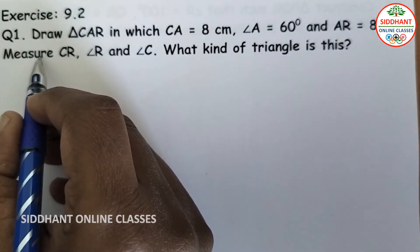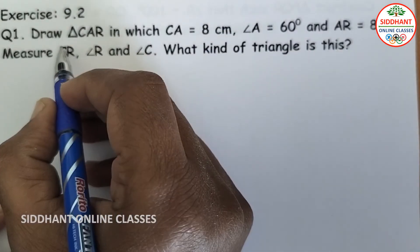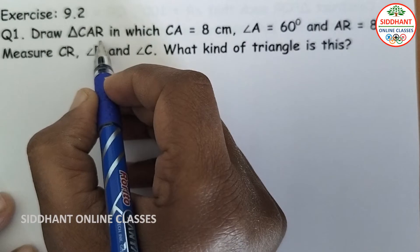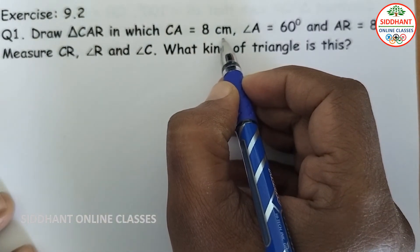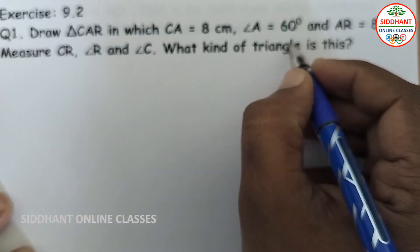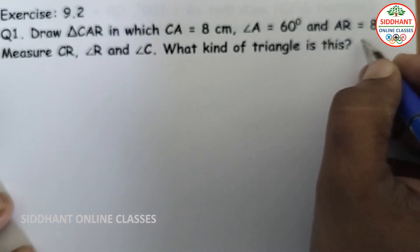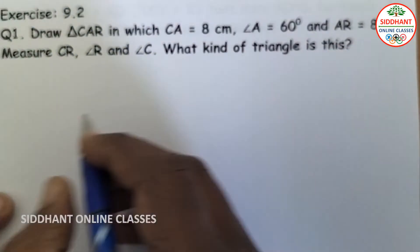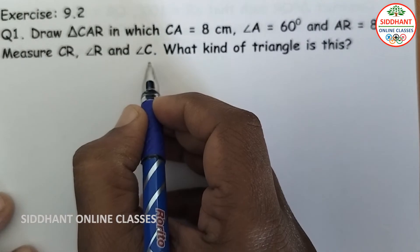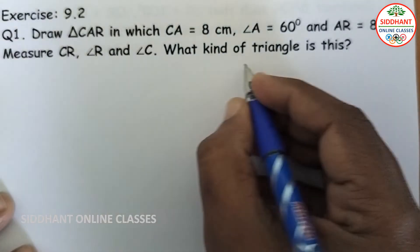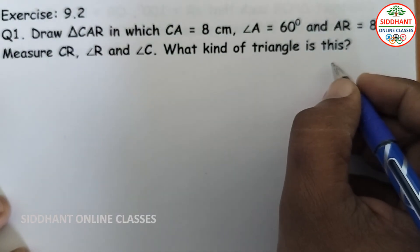Exercise 9.2, Question No. 1: Draw Triangle CAR in which CA is 8 cm, Angle A is 60 degrees, and AR is 8 cm. Measure CR, Angle R, and Angle C. What kind of triangle is this?